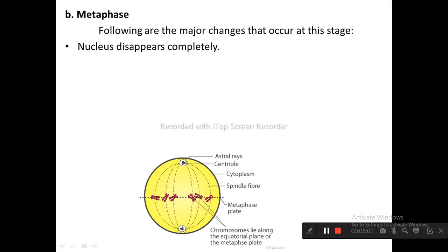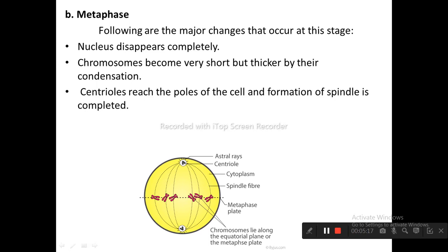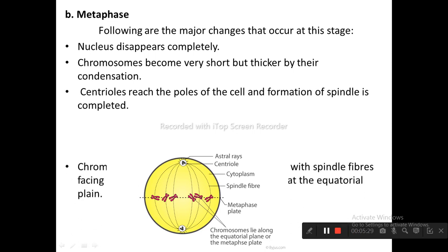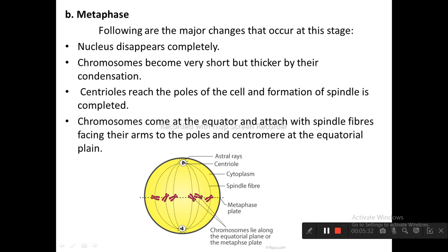The next stage is metaphase. The major changes that occur in metaphase are: the nucleus disappears completely; chromosomes become very short but thicker by their condensation; centrosomes reach the poles of the cell and formation of the spindle is completed; centromeres come to the equator and attach with spindle fibers, facing their arms to the poles and centromere at the equatorial plane; and chromosomes lie along the equatorial plane, also called the metaphase plate.